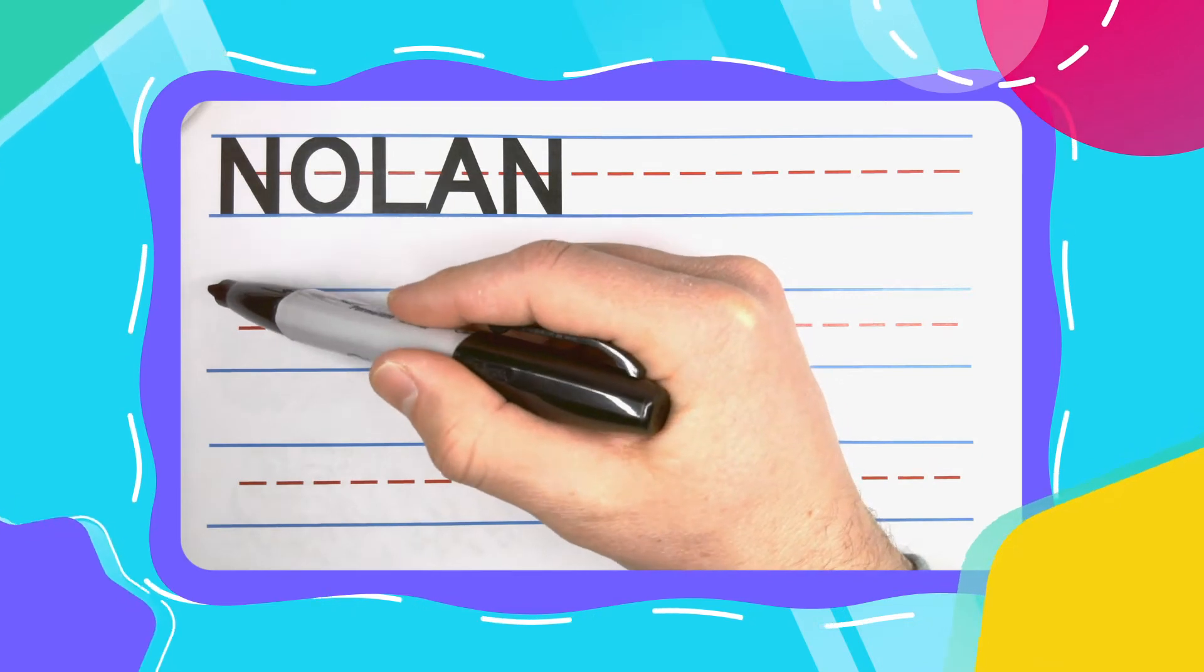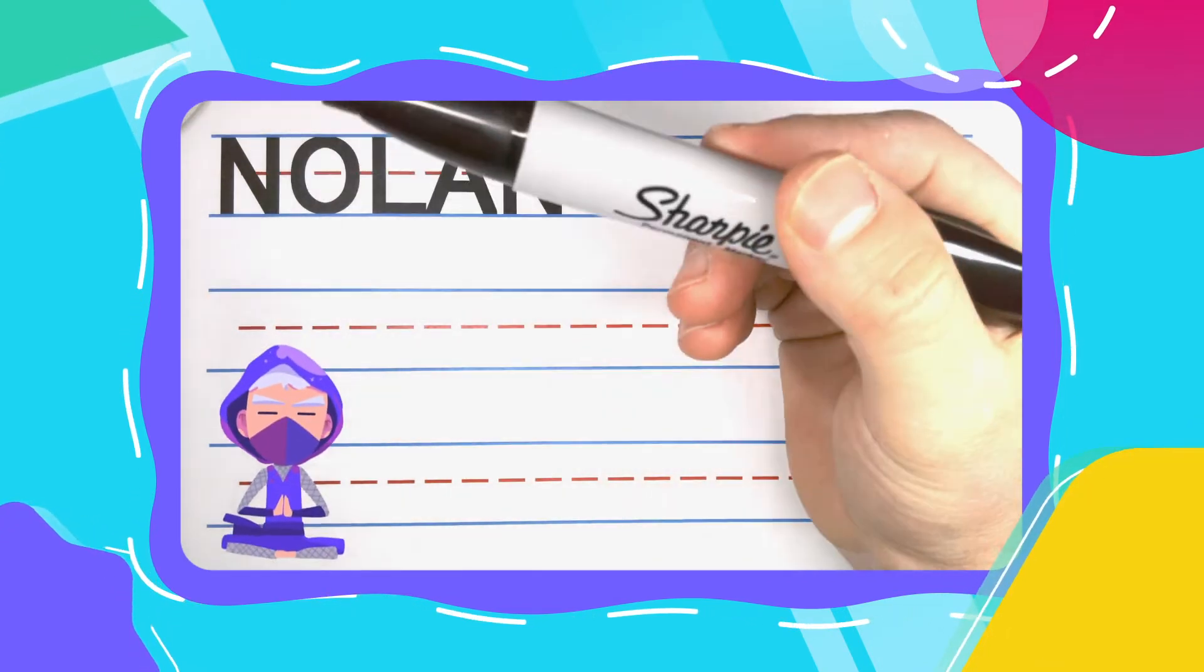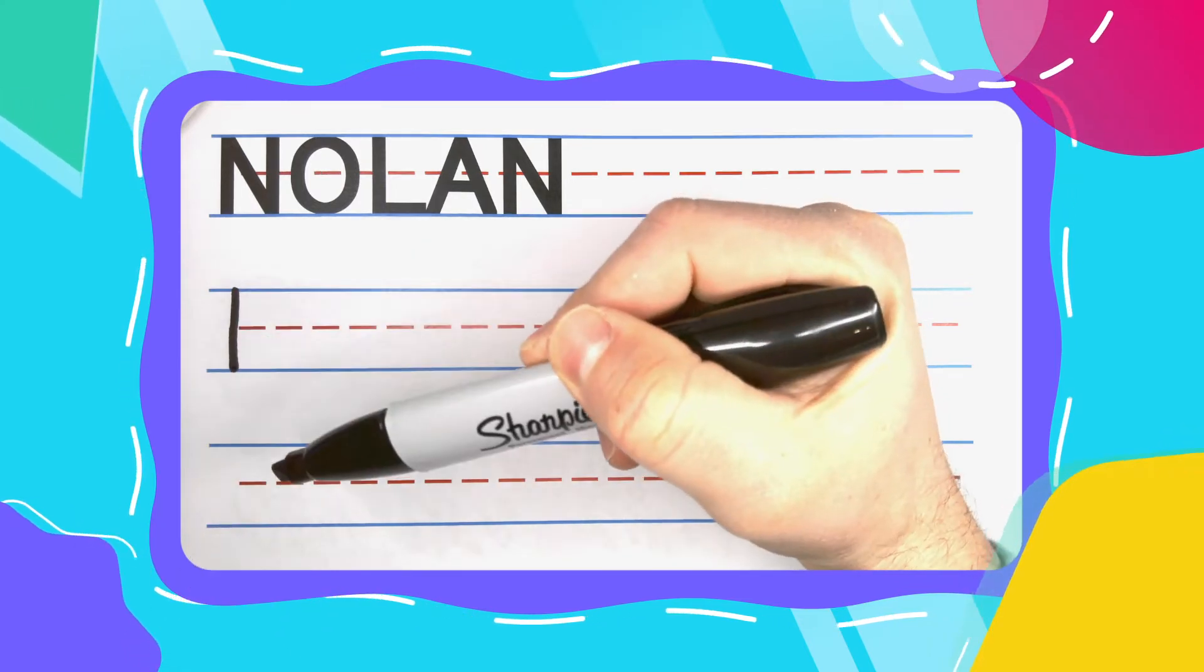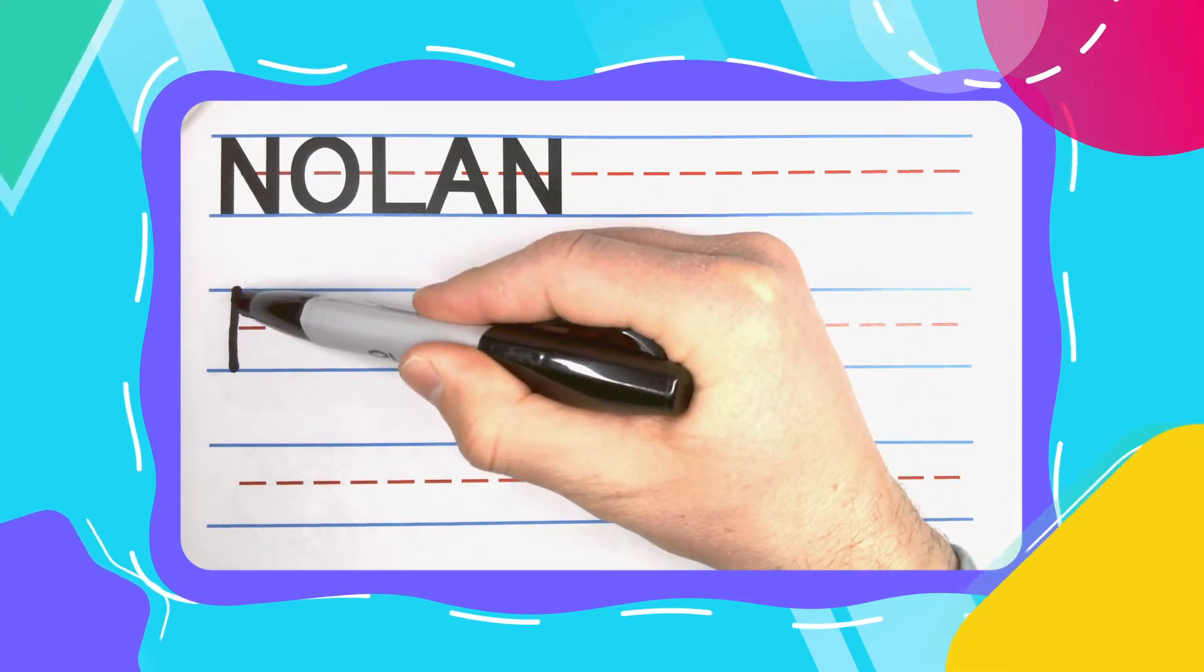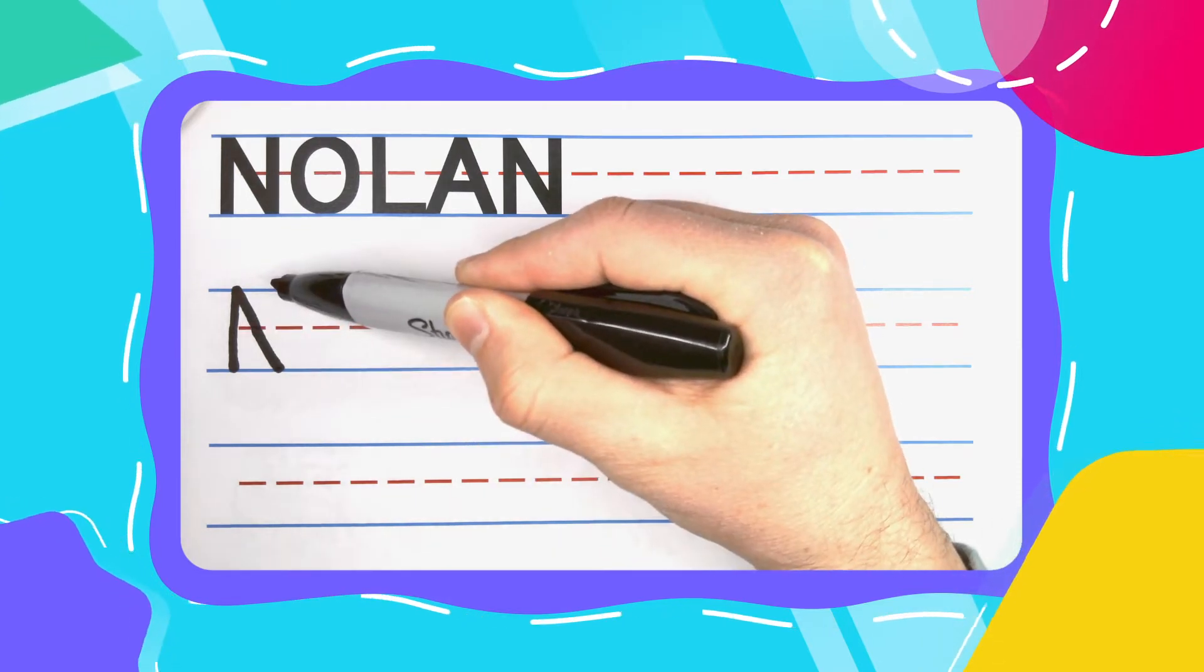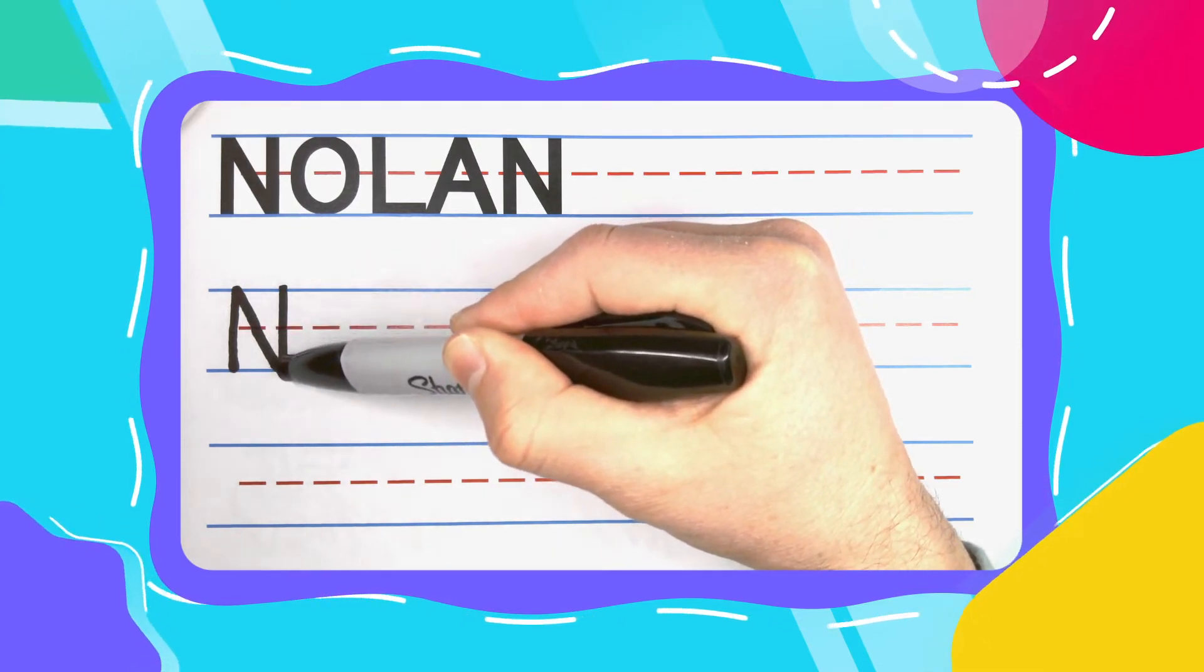The first letter in Nolan is an N. Come up to the top and draw a line straight down. Pick your pen up, come back to the top, diagonal down until you reach the bottom. Pick your pen back up and draw a line straight down.